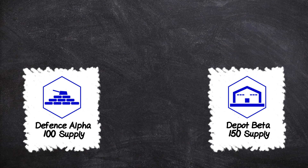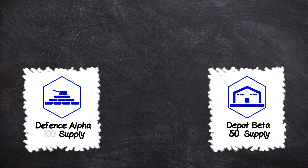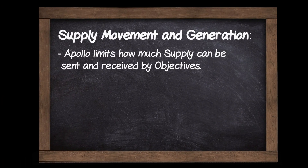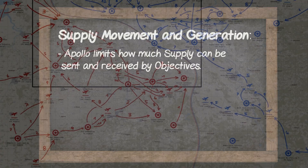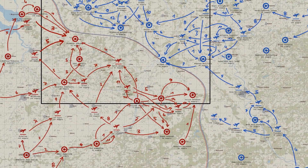But here's where it gets complicated. We don't want a situation where Defence Alpha is being bombed to rubble and then fully replenishing the next day. And we also don't want a situation where Depot Beta donates all its supply to Defence Alpha and effectively destroys itself. So Apollo imposes limits on how much supply can be sent and received by each objective, intended to make the flows of supply between objectives feel more realistic.